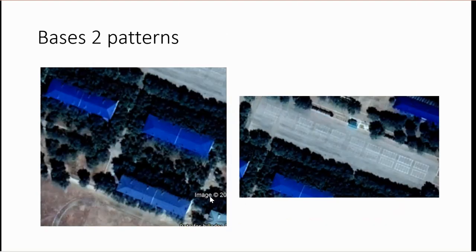Then we look at typical patterns for bases. Most military bases have nice new roofs — they're not always blue, sometimes they're red, but they're new — and they have these white squares. You remember the first picture where we saw some soldiers standing? They were standing on these white squares.